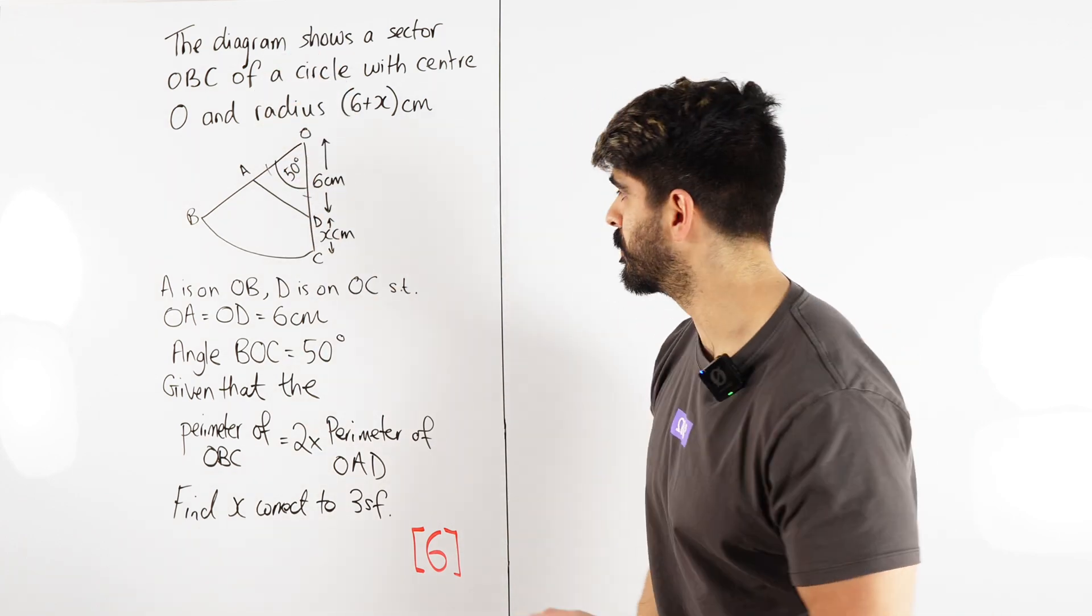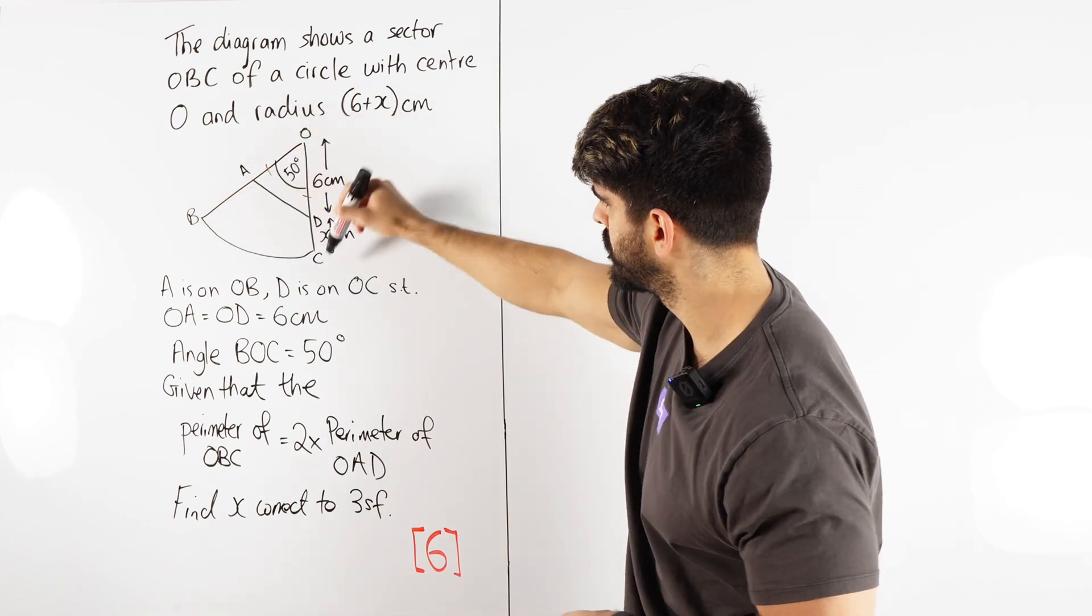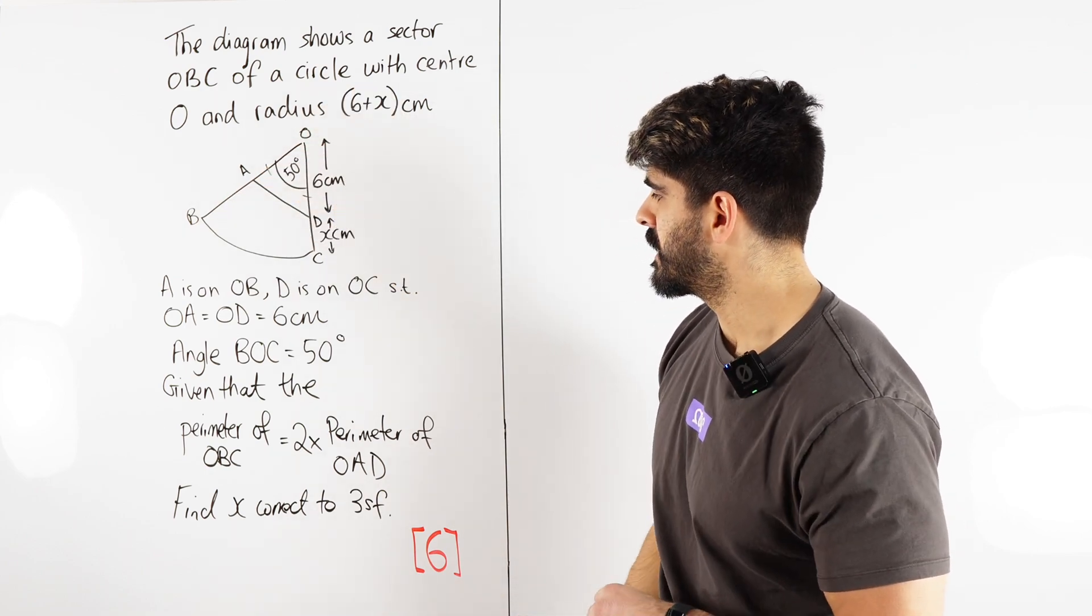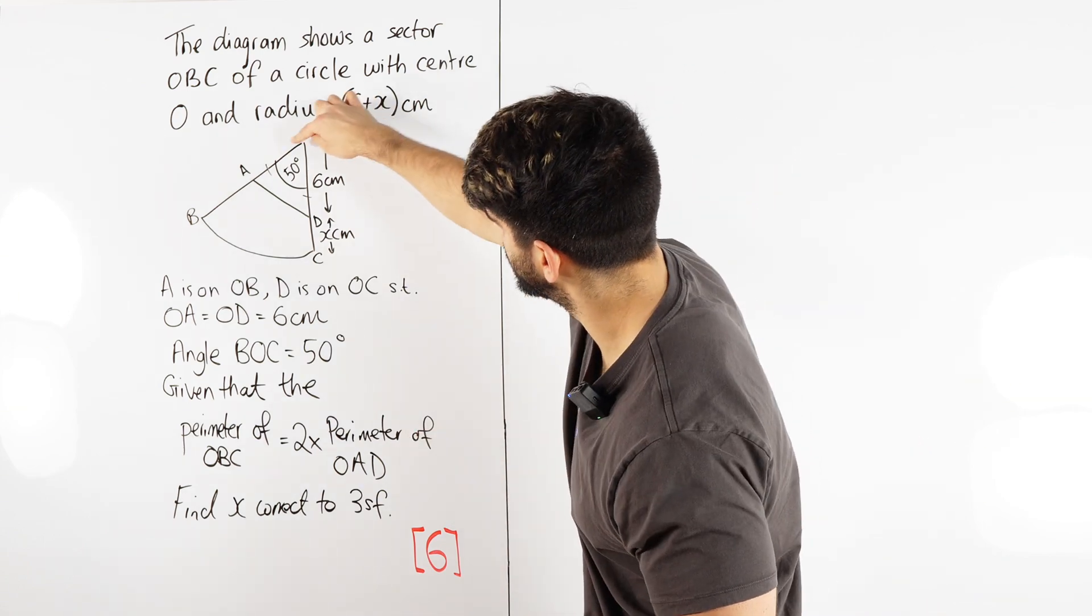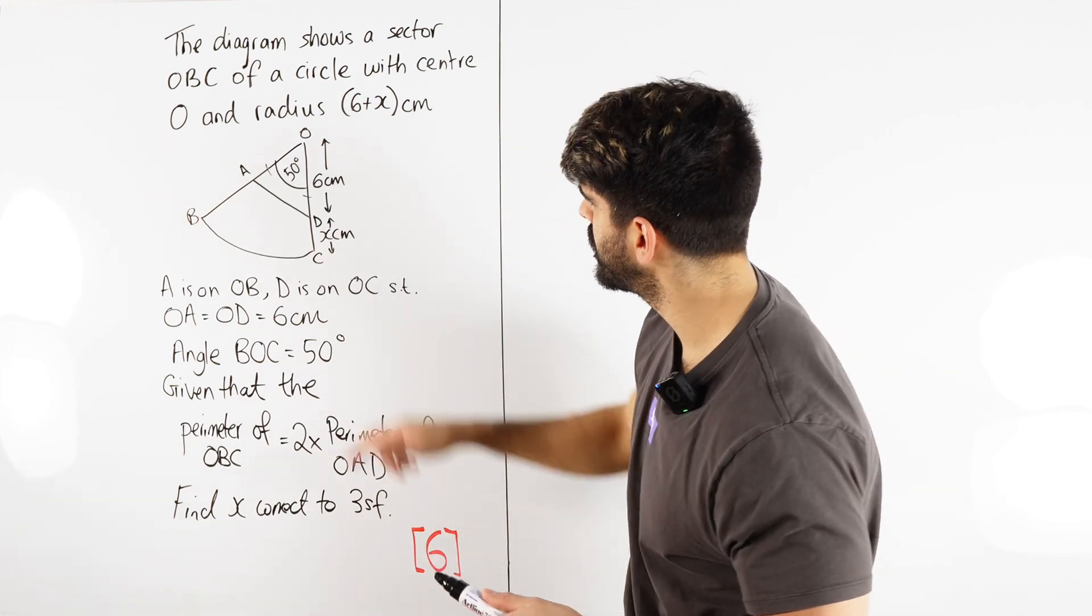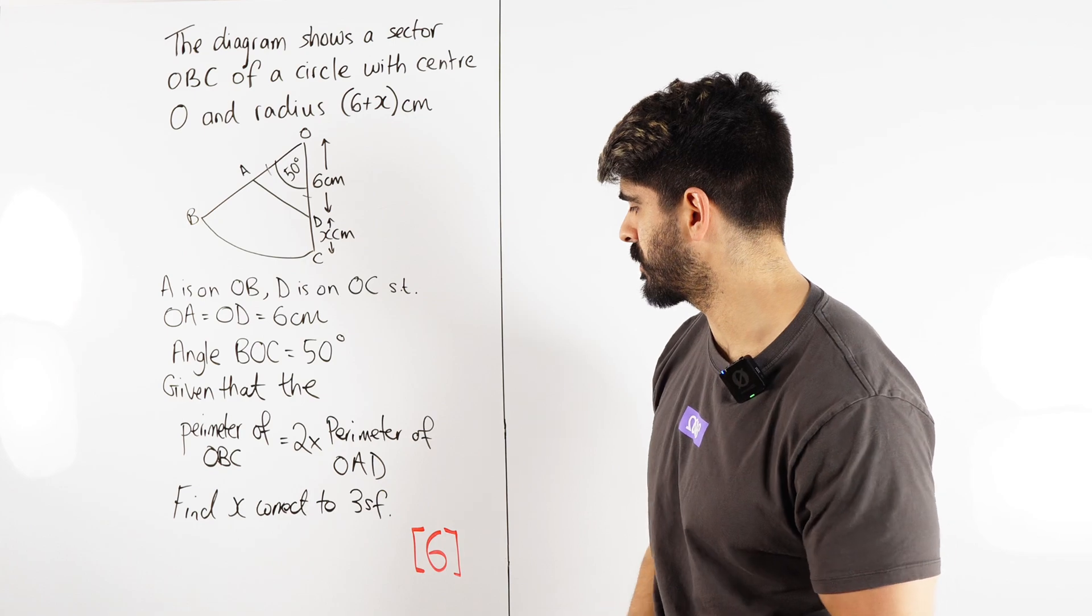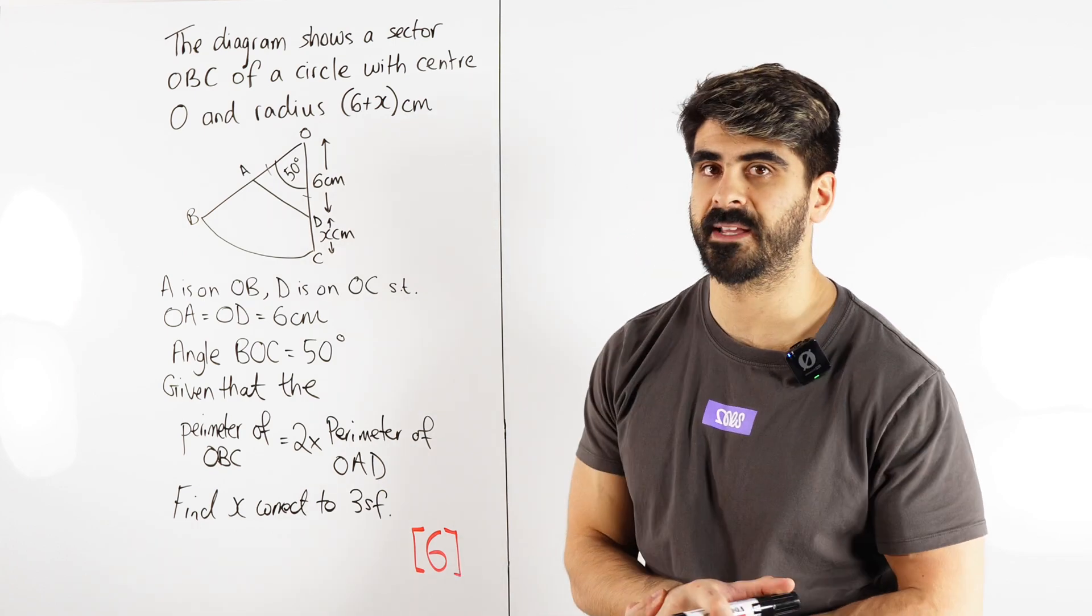So it's an isosceles triangle. We have this angle here, BOC, BOC is 50 degrees, and it says given that the perimeter of OBC, this perimeter, is two times bigger than the perimeter of OAD, find x correct at 3SF. Okay, so there's a lot to unpack here.